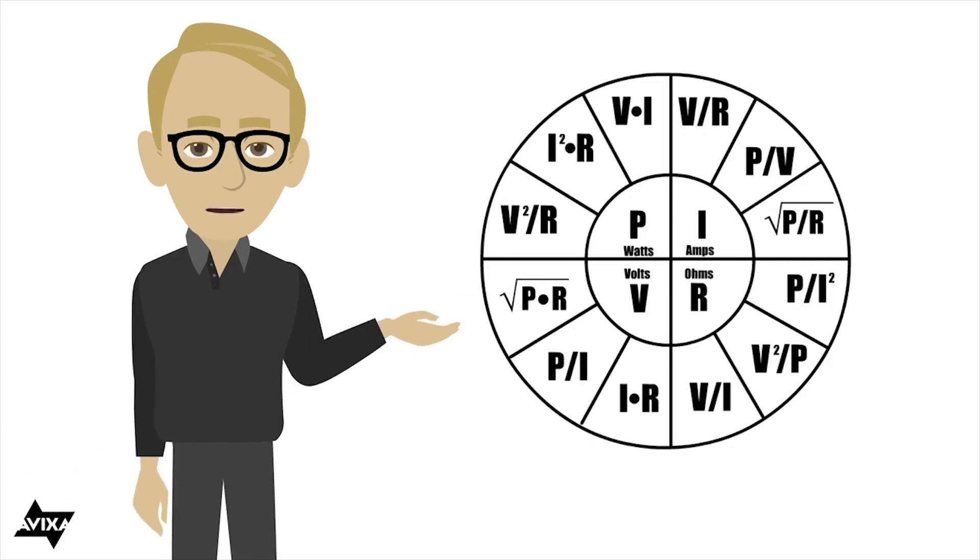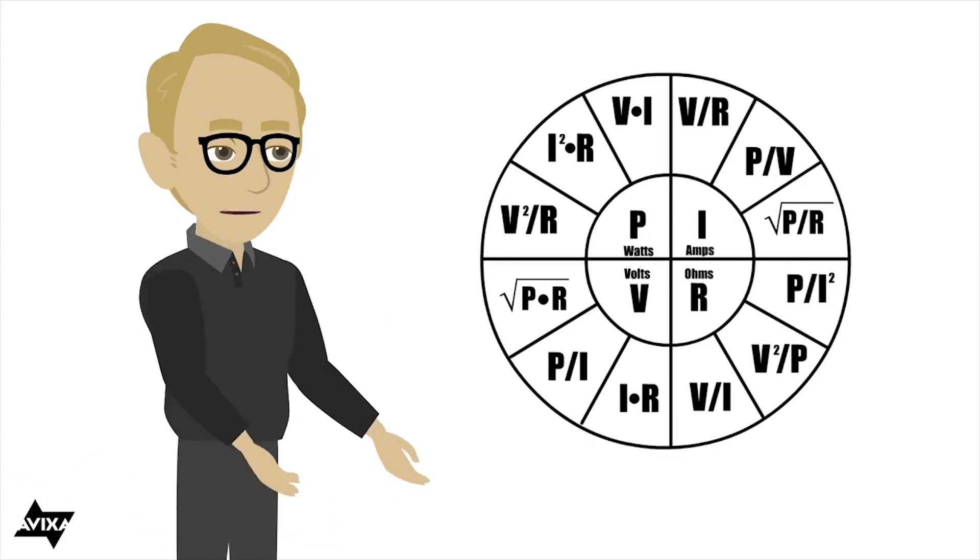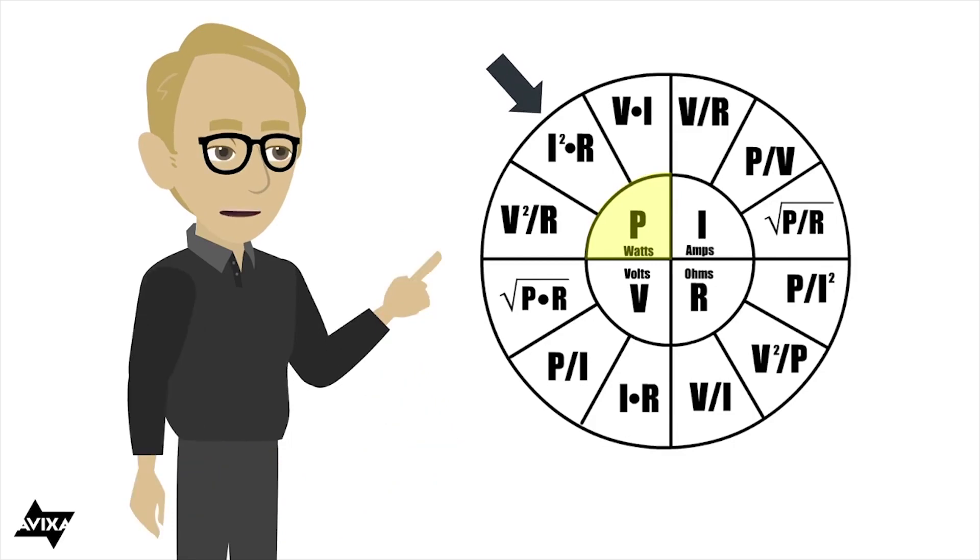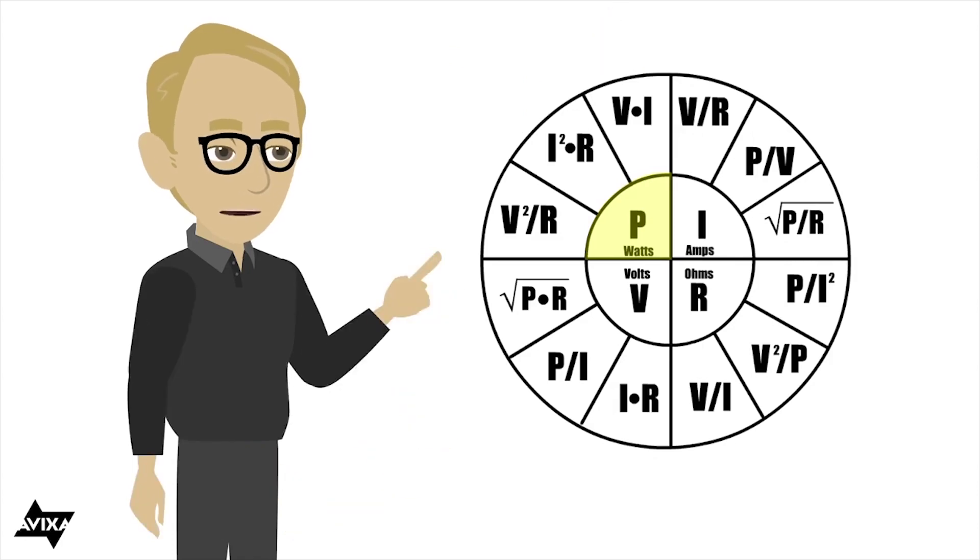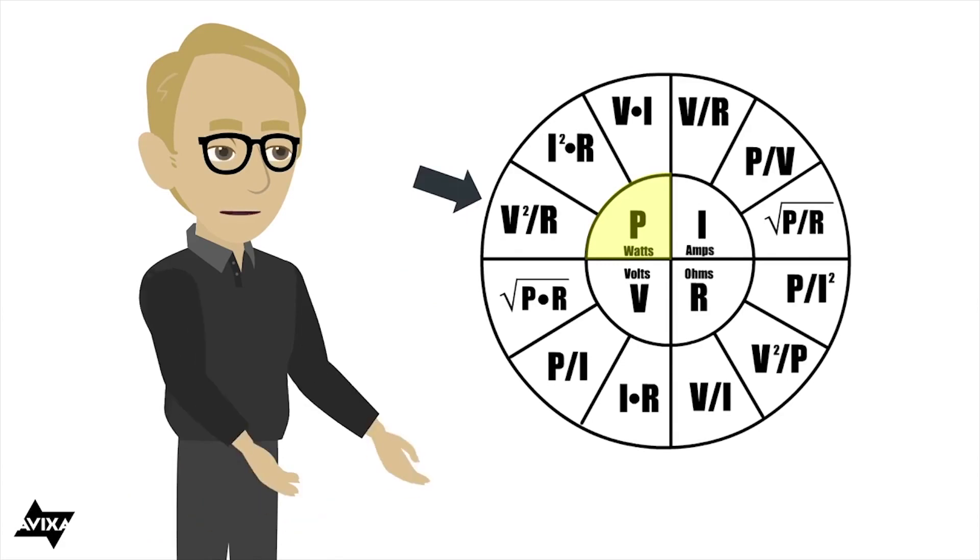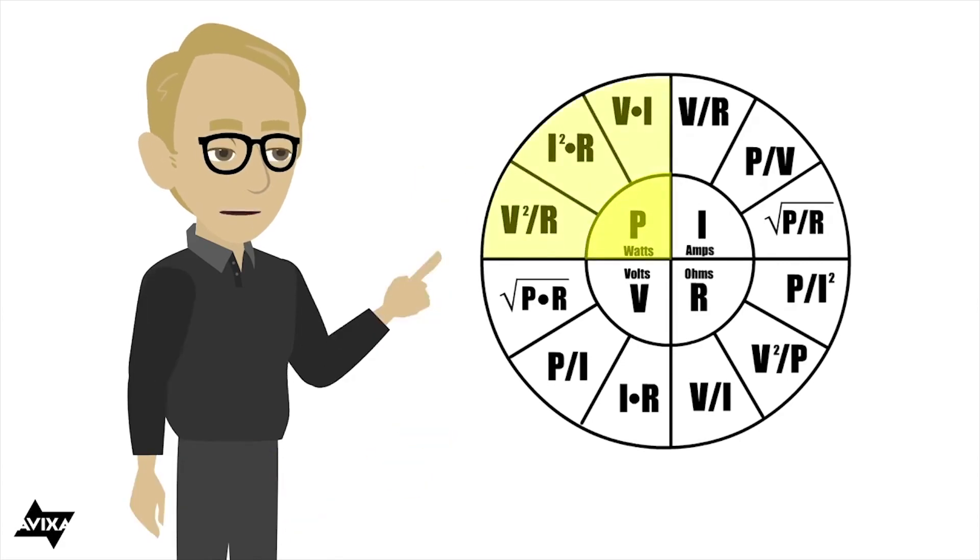Now the way that we use this, if I know any two things about a circuit, I can discover the rest using the formula wheel. For example, if I want to discover how much power is being consumed in the circuit, and I know the current and the resistance, I look in the upper left quadrant here, and I can take current squared times the resistance of the circuit, and that will give me the power. If I know the voltage and current, I can take the voltage and multiply that times the current. If I know the voltage and resistance, I can take the voltage squared and divide that by the resistance.